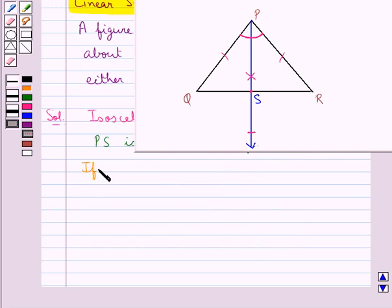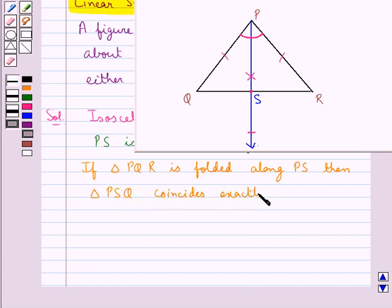Now if the triangle PQR is folded along the bisector of the angle QPR, that is PS, then the triangle PSQ coincides exactly with the triangle PSR.